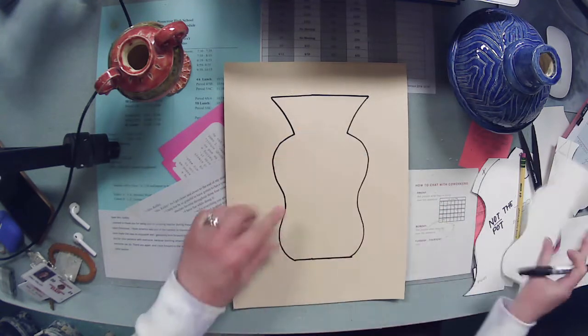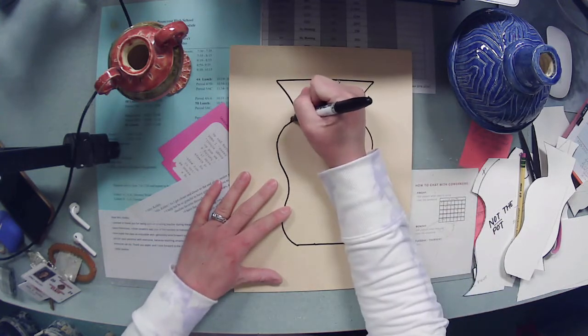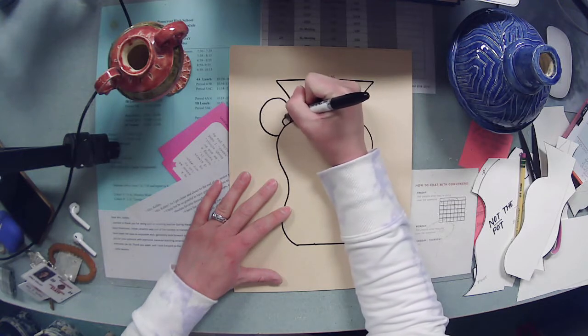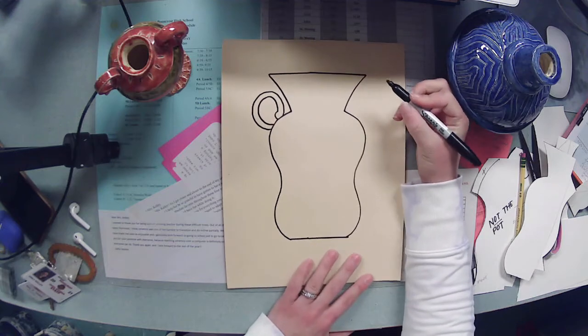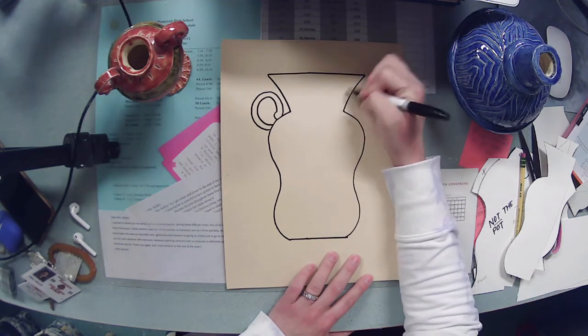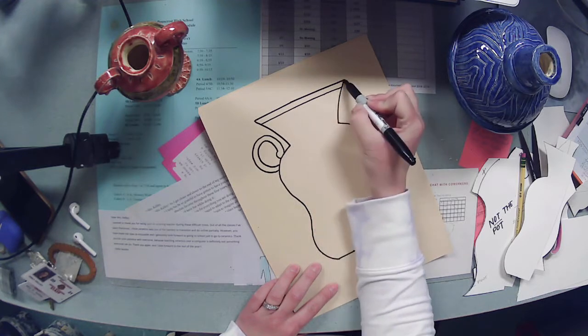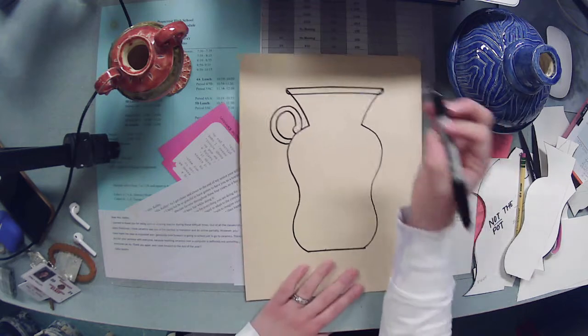That gives you the silhouette of your pot and then at this point I would add if I wanted to do handles of any sort.